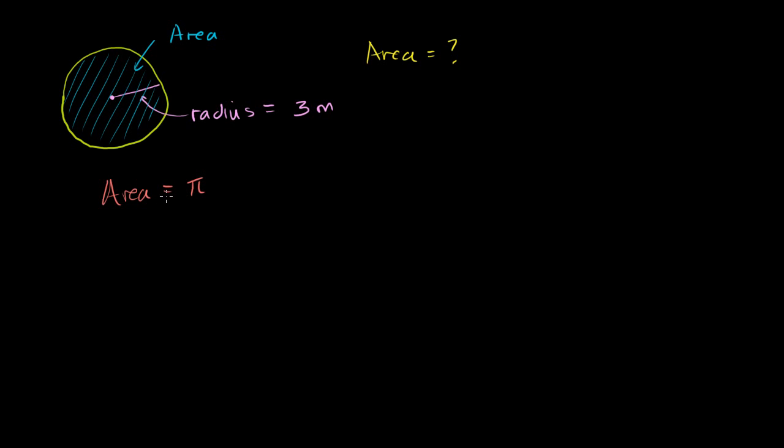And remember, pi was that number that people figured out was the ratio between the circumference and the diameter of a circle. It's 3.14159, keeps going on and on and on. It's just a number, but it's a very magical number. And remember, pi times the radius squared.